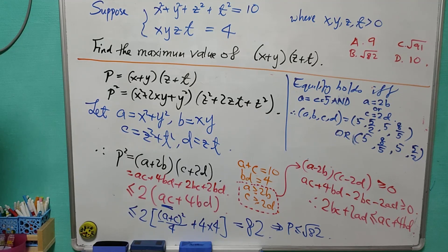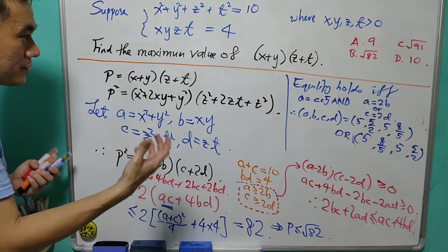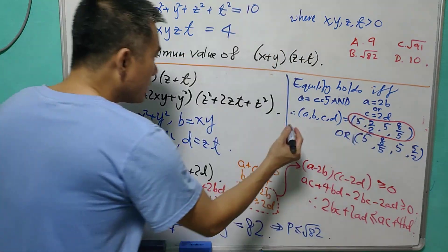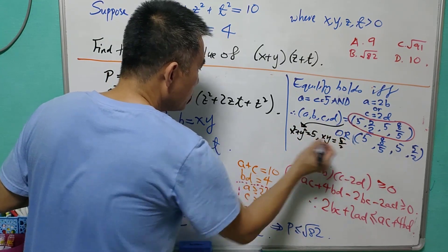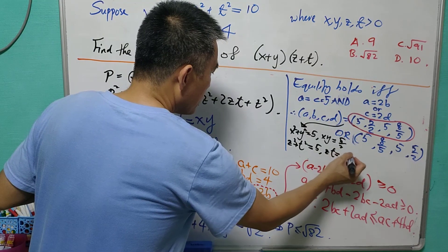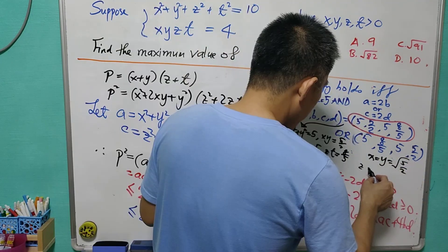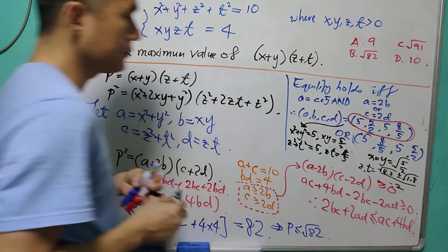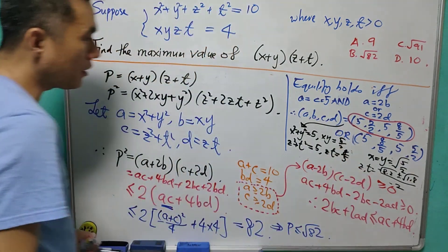But we need to check whether with these values of a, b, c, d, there exist actual x, y, z, t. Considering one case: x² + y² = 5, xy = 5/2, z² + t² = 5, zt = 8/5. This corresponds to x = y = √(5/2), and z, t = (√8.2 ± 1.8)/2. In other words, p = √82 is achievable, and this is one valid example of x, y, z, t.